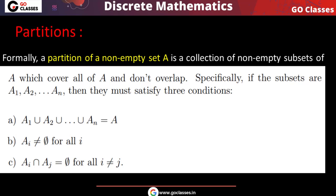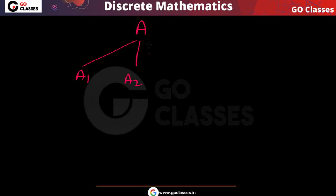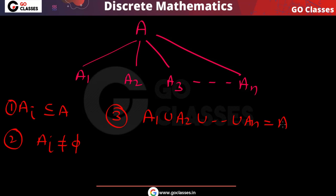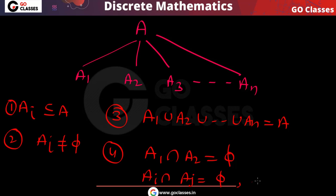The formal definition of partition: given a non-empty set A, a partition means splitting A into subsets where: (1) each Ai is a subset of A, (2) each Ai is non-empty, (3) A1 ∪ A2 ∪ ... ∪ An = A (all elements covered), and (4) they are pairwise disjoint — Ai ∩ Aj = φ whenever i ≠ j.